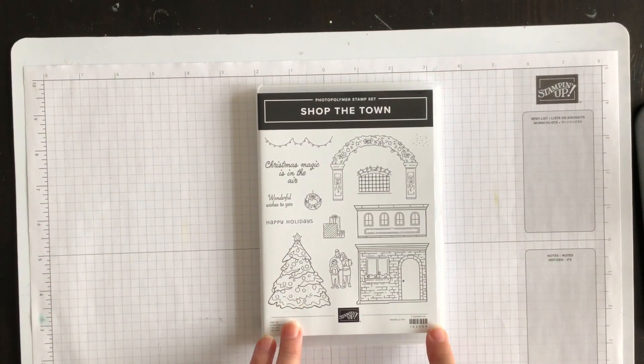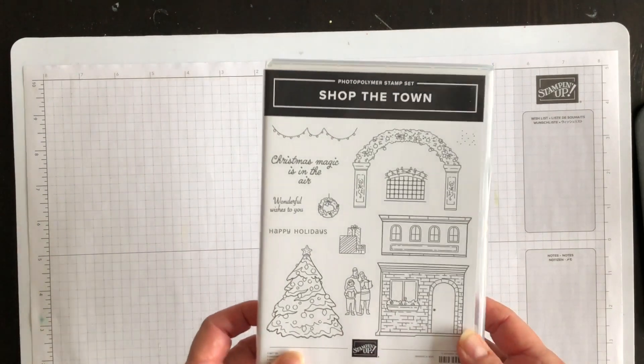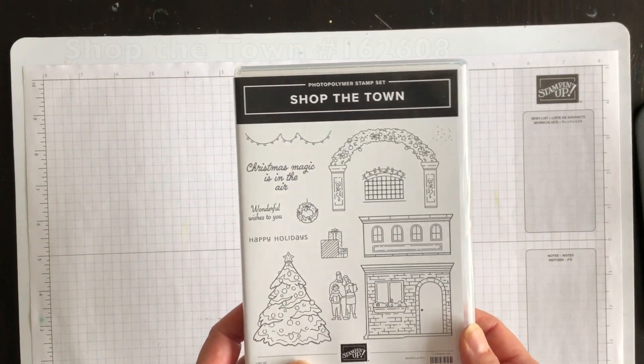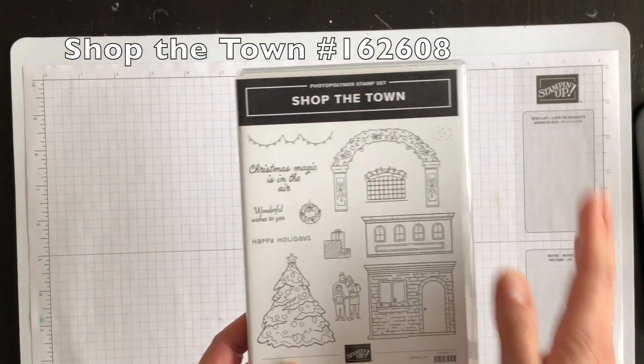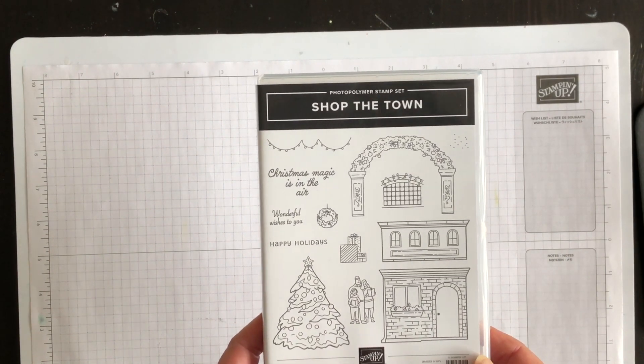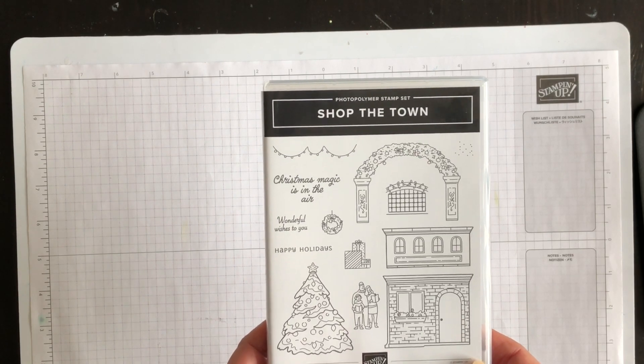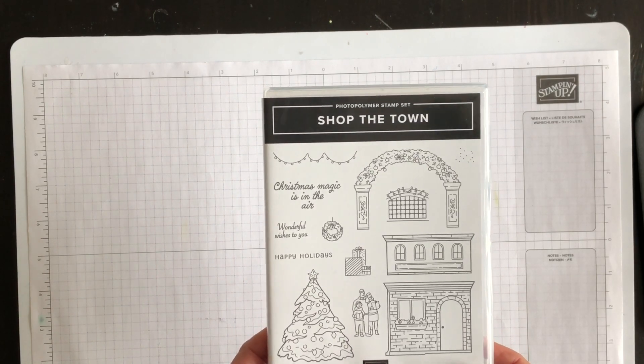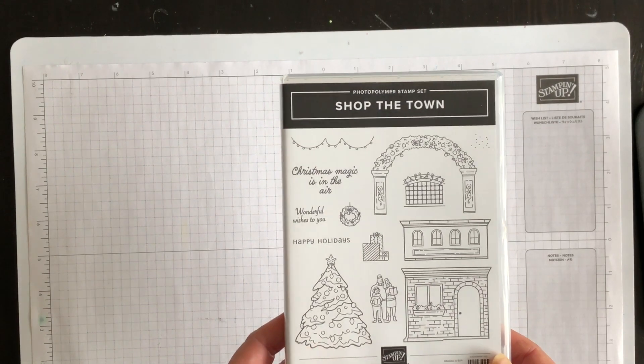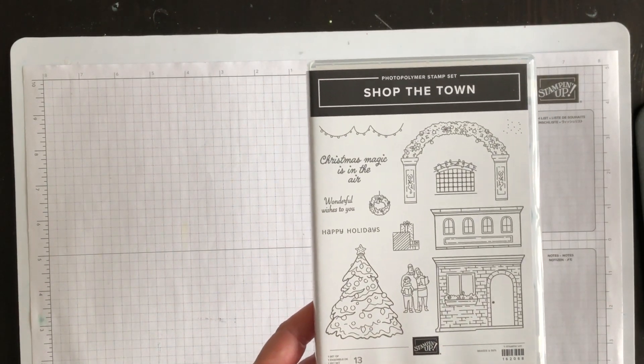I will also be using my Shop the Town stamp set. This is a super fun set for building a Christmas village and then decking it out for the season. And when the holiday season ends and a new year begins, you can use these stamps to set a quaint village scene without the festive decor. Now, for today's card, I'm going to be using the Christmas tree image. So, let's start with that.